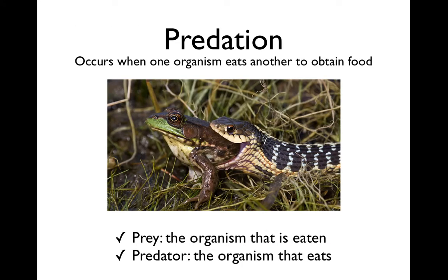First is predation. This is when one organism eats another to obtain food. This is a predator-prey relationship. The prey is the organism that is eaten, and the predator is the organism that eats. We can see an image here of a snake and a bullfrog — the snake is the predator and the bullfrog is the prey. Many of you will be very comfortable with this relationship because you've probably seen this when you watch nature shows.